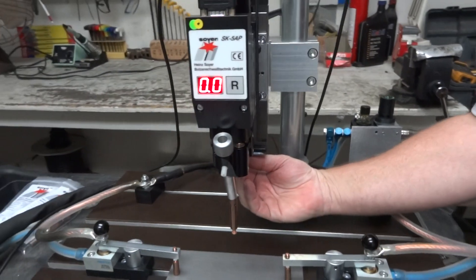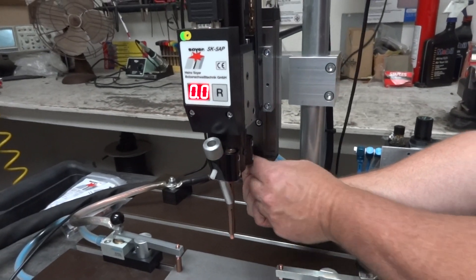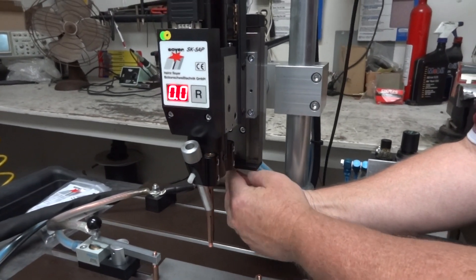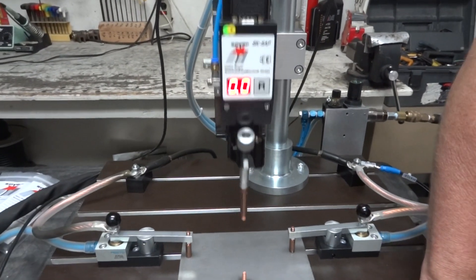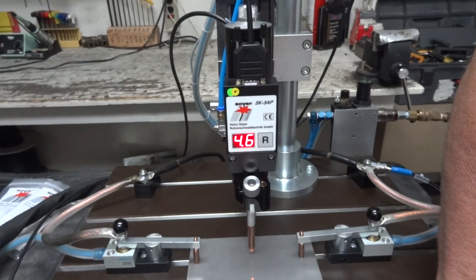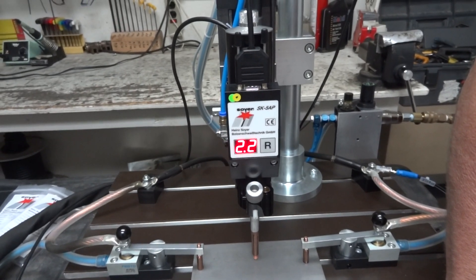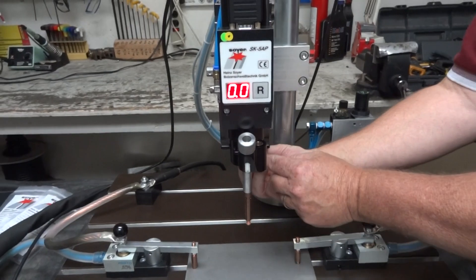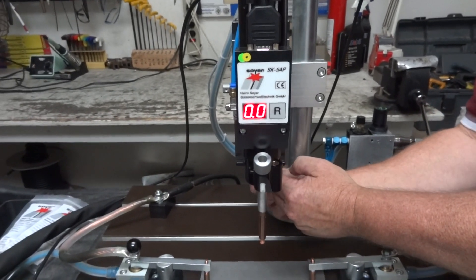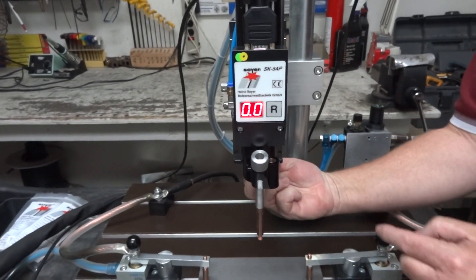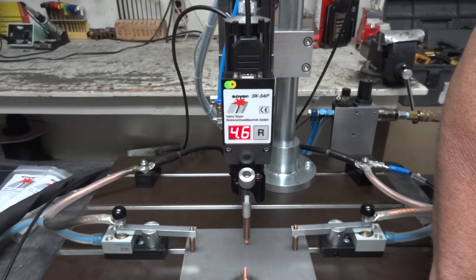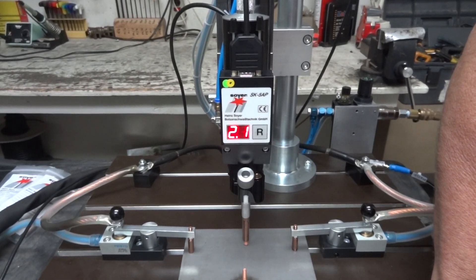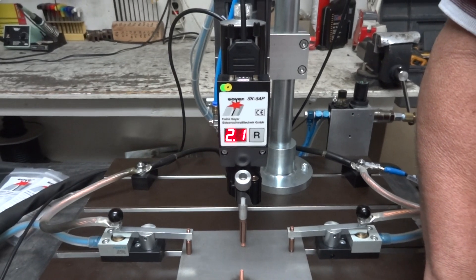2.3, so you can see you can be very precise. I'll tighten that little set screw that holds it. So we're at 2.2 millimeters. So you get the idea. Right now our immersion depth is 2.1 millimeters.